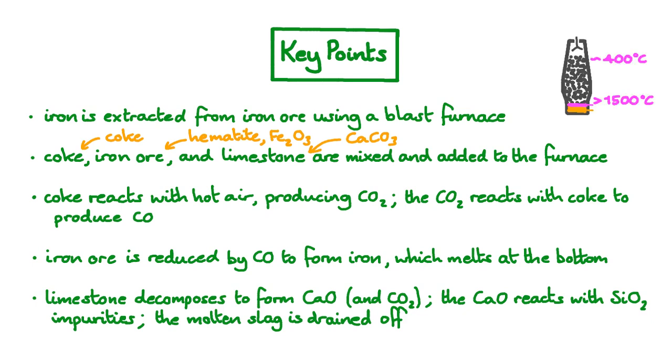In operation, the temperature at the bottom of a blast furnace is over 1500 degrees Celsius. We have a layer of molten iron with a layer of molten impurities that we call the slag. At the top of the furnace, the temperature is closer to 400 degrees Celsius. And in between, we have a region at around 800 degrees Celsius, where the calcium carbonate begins to decompose.